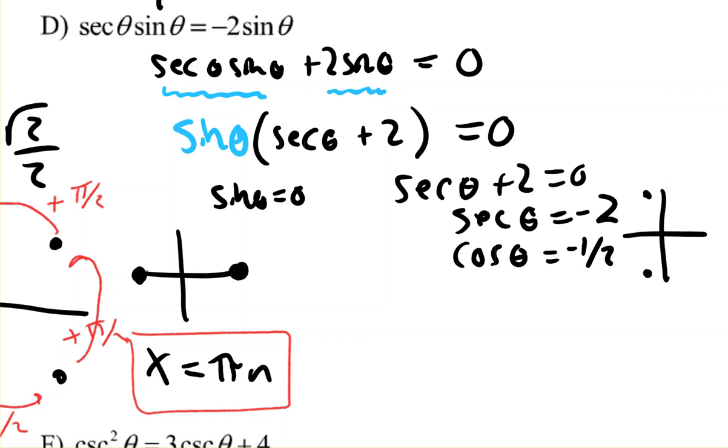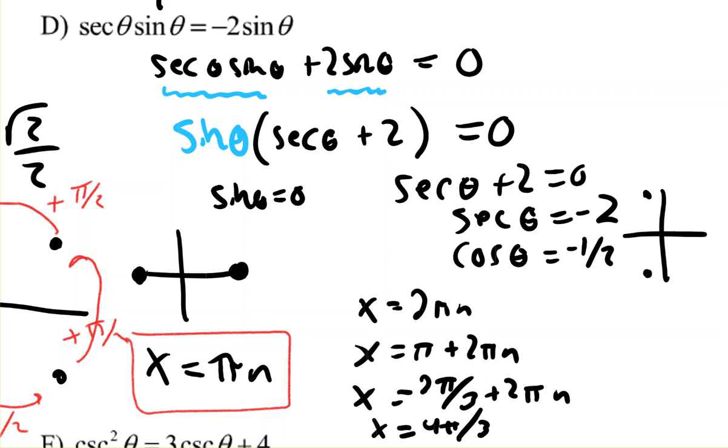So since there's four locations here, you could get your answer with four equations. And that's kind of tedious, but 0 plus 2 pi n, pi plus 2 pi n, 2 pi over 3 plus 2 pi n, and 4 pi over 3 plus 2 pi n. Because there's four places.